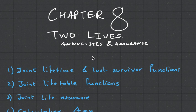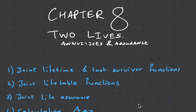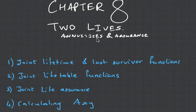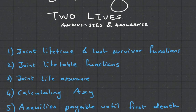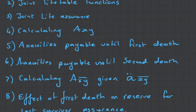Hey guys, it's MJ, the student actuary, and we're talking CT5 chapter 8, which is annuities and assurances for two lives. This is where it starts getting interesting, where our contracts no longer depend on just one life but they depend on two. This was very important because they found that in this industry, couples were buying products - a husband and wife. We're going to be looking at the mathematics of joint lifetimes and last survivor functions. I'm going to try to do this all in one video.